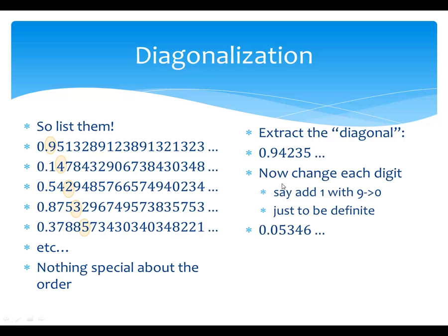Now here's the other cool part. Change each digit in a systematic way. Let's just add 1 to each digit, and let 9 wrap around to 0. There's nothing special about that — it's just to have a definite kind of answer. Now the 9 becomes a 0, 4 becomes 5, 2 becomes 3, 3 becomes 4, 5 becomes 6. That's a new number.